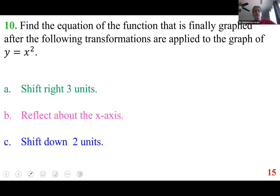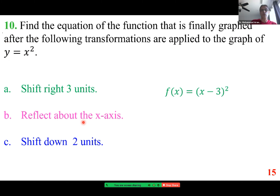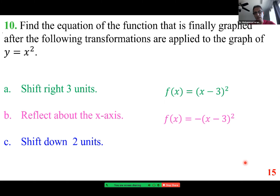To find the equation after applying transformations to y = x²: shift right 3 units — this becomes (x−3)². Then reflect about the x-axis — put a negative in front: −(x−3)². Then shift down 2 units — subtract 2: y = −(x−3)²−2.